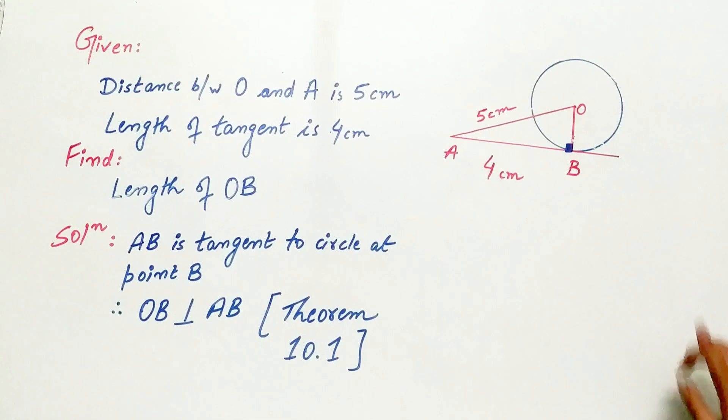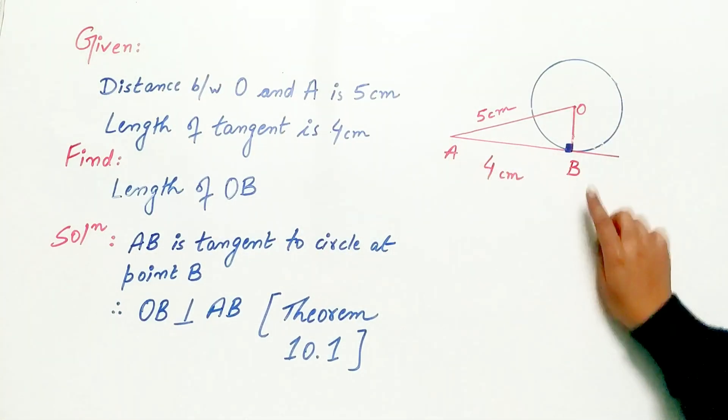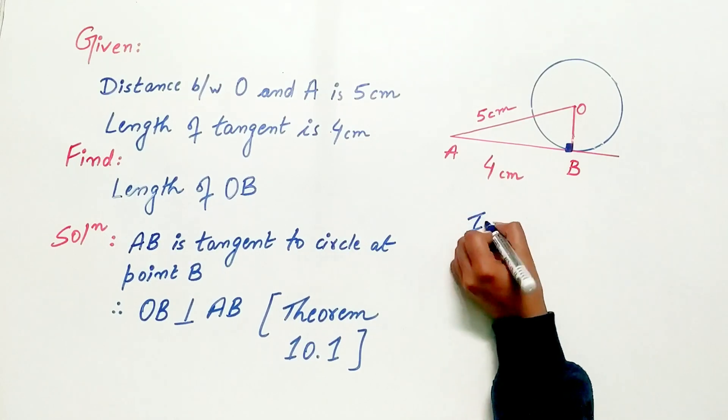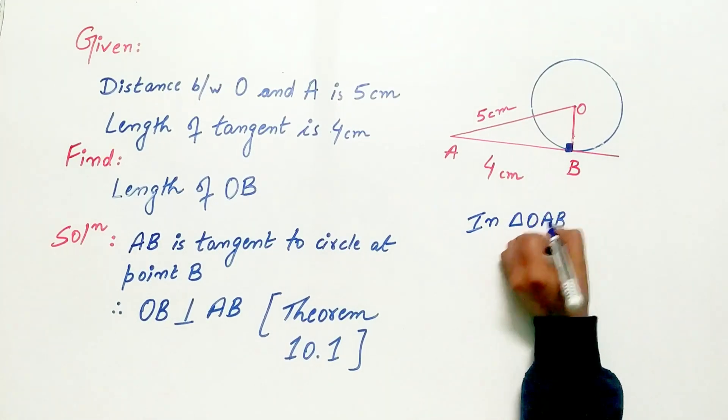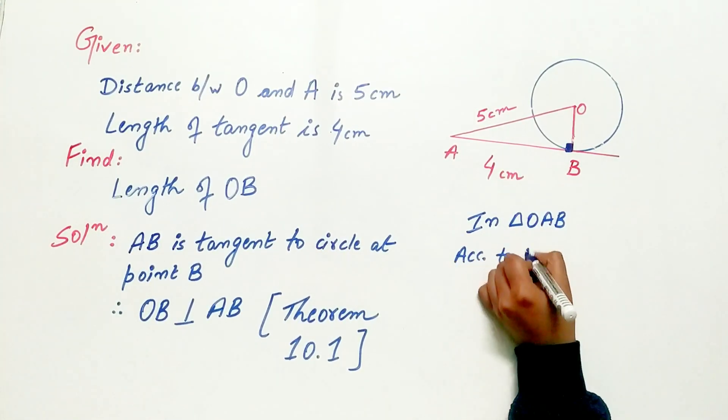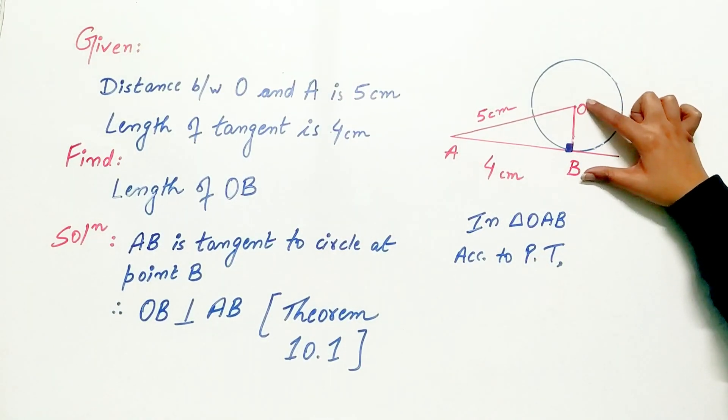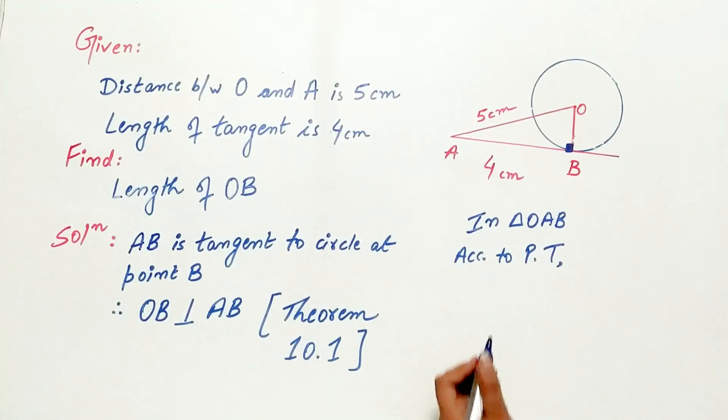Now look carefully. OAB is a right-angled triangle. And through Pythagoras theorem, we can easily find the length of OB. Let's find out.